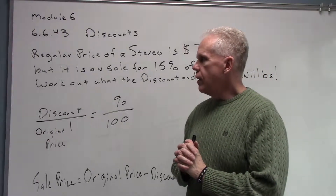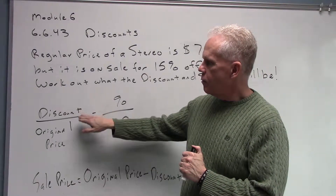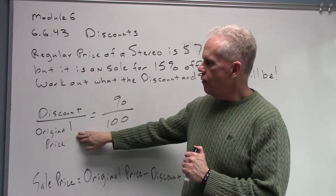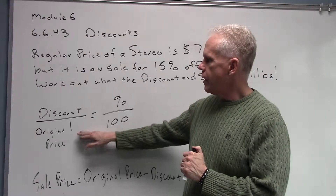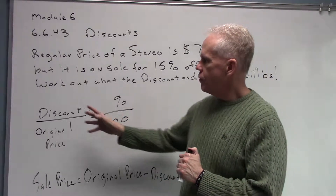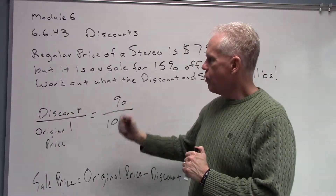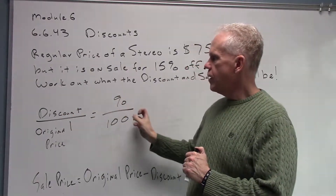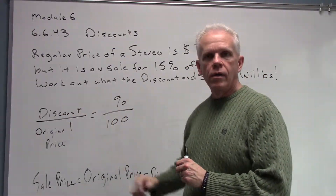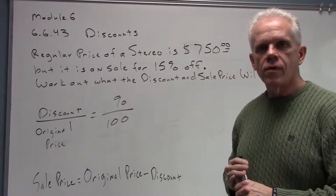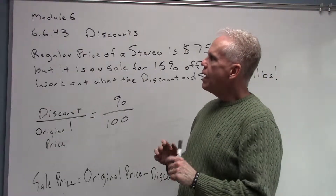The proportion we're going to use is: the amount of our discount set over the original price of what we're buying equals percent over 100. So we've got a proportion set up where one fraction equals another fraction, and that's the model we're going to work from.